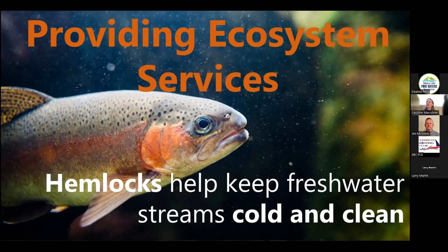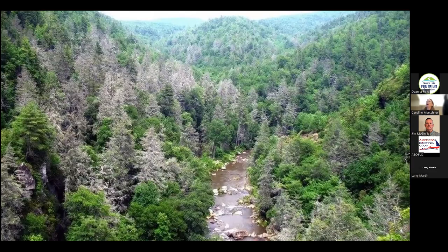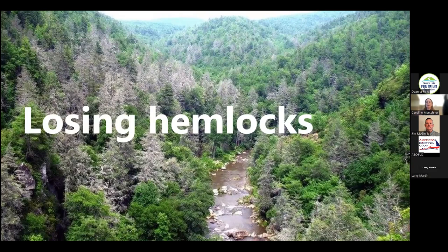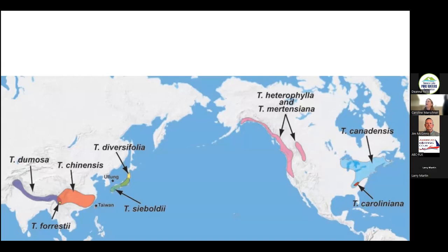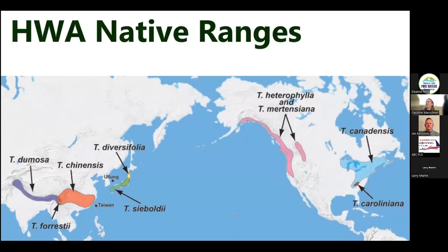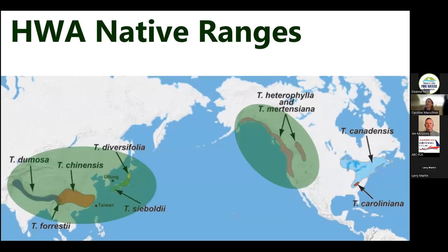When you have hemlocks in that watershed they also provide dense direct shade when they're actually over your stream. What we don't want is for our watersheds to look like the Pisgah National Forest in the southern Appalachians, where all those gray, sad trees are hemlocks that were killed by this pest — the hemlock woolly adelgid — which is an invasive pest that feeds exclusively on hemlock trees in the United States.